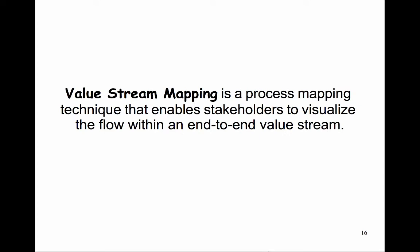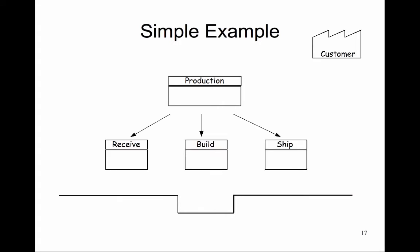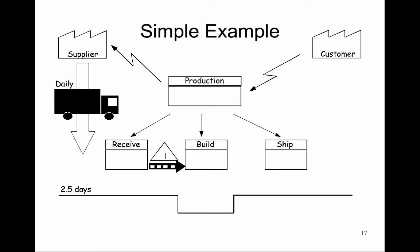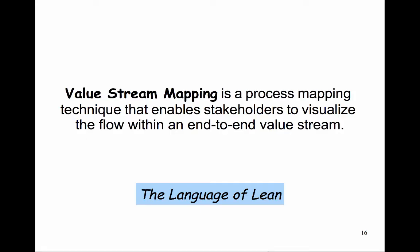The best way to document the value stream is to draw a visual representation of every process in the supply and information flows. This technique is called value stream mapping, or VSM. Value stream mapping is a process mapping technique that enables stakeholders to visualize the flow within an end-to-end value stream — a pictorial snapshot, basically a block process diagram at a higher level, showing the material and information flow. You walk through the sequence of steps from start to finish, mapping all the way back to the customer. The objective is to break down the value from the customer's standpoint, from beginning to end, and highlight non-value-added wastes, addressing disconnects, redundancies, and gaps. This technique is often called the language of lean.